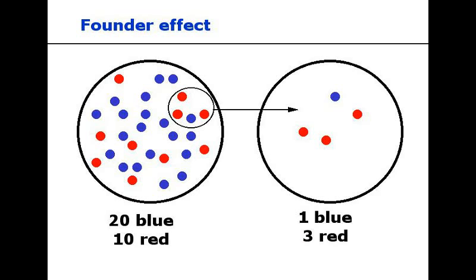Furthermore, due to the founder effect, populations descended from people who migrate away from the original population will have lower genetic diversity than the original population. If the multi-regional hypothesis were correct, you would expect to find a similar spread of genetic diversity across multiple regions. If the Eurocentric hypothesis were correct, we would expect to find the highest rates of genetic diversity within Europe. However, the highest rates of genetic diversity are found in Sub-Saharan Africa — particularly the Khoisan peoples, who are the most genetically diverse people group in the world.